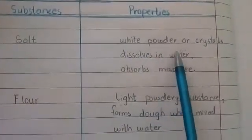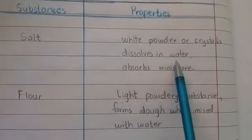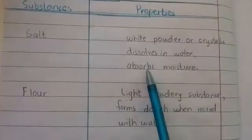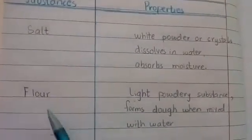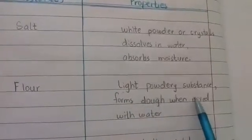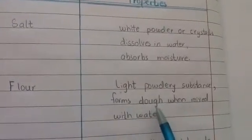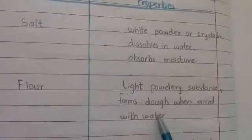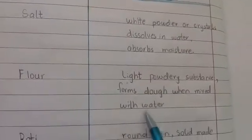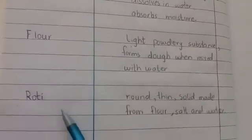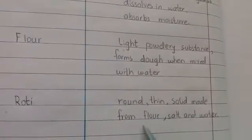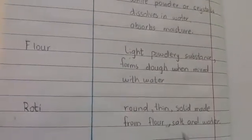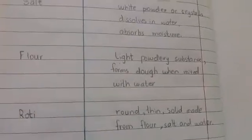Salt: white powder or crystals, dissolves in water, absorbs moisture. These three properties belong to substance salt. Flour: light powdery substance, forms dough when mixed with water. Roti: round thin solid made from flour, salt and water. So these are properties of roti.